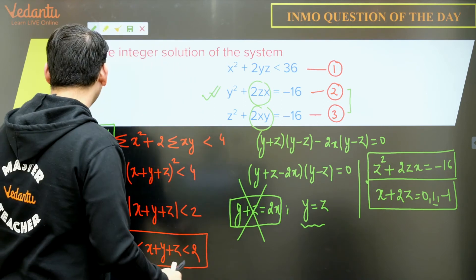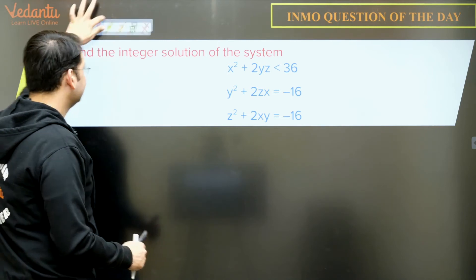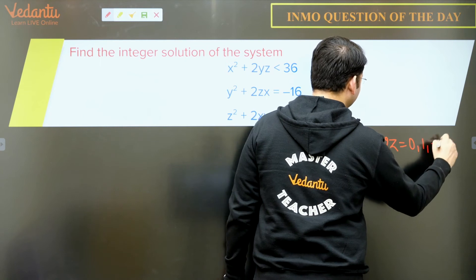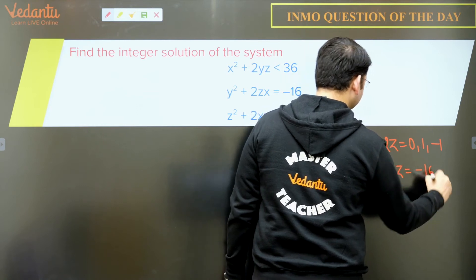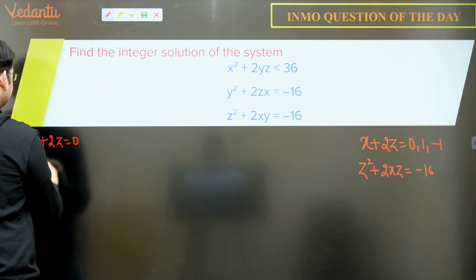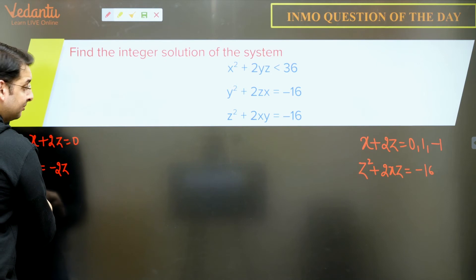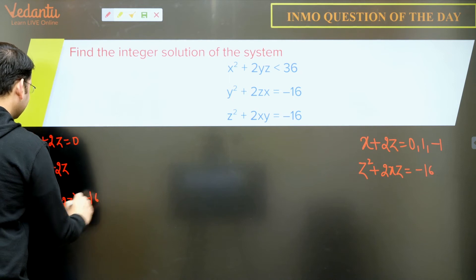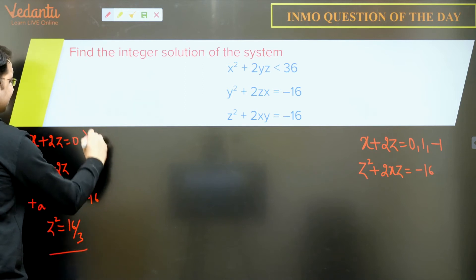So let us try to solve this one. So what do we have is, x + 2z is either 0, 1 or -1 and we have z² + 2xz = -16. So let us take the first possibility that is x + 2z = 0. So that means x = -2z. So we have from the second equation, z² + 2z(-2z) = -16. 4z² - z², so z² = 16/3. So clearly this is not an integer, so this possibility will not be counted.